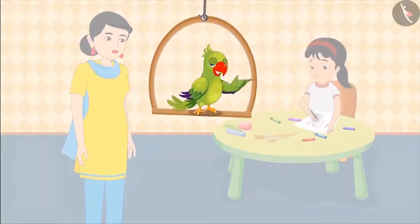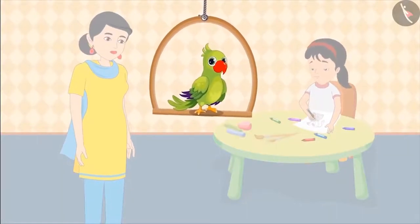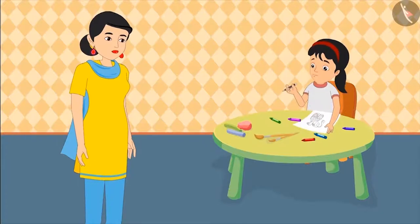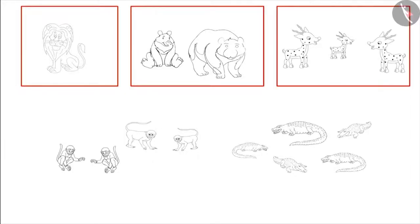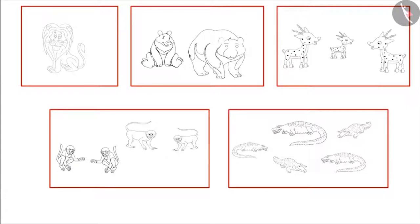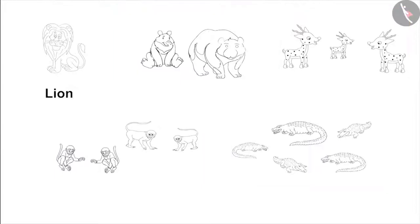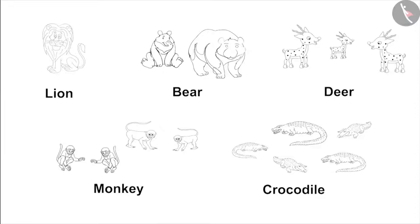Pinky goes home and draws pictures of all the animals. She shows mom, who praises her good drawings. Mom asks Pinky to make a group of one type of animal and give each group the name of the animals shown in it. Below each group, Pinky should write the number of animals in that group.